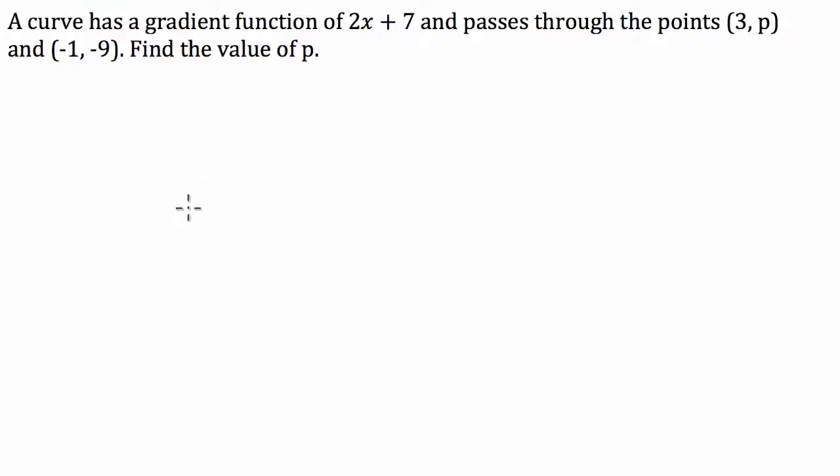G'day guys, I've got an anti-differentiation question for you today that a student has asked me to run through. So what have we got here? A curve has a gradient function of 2x plus 7 and passes through the points (3, p) and (-1, -9). Find the value of p.